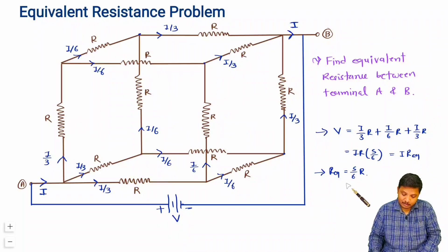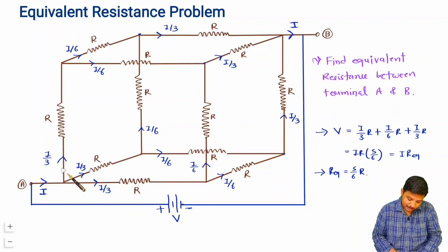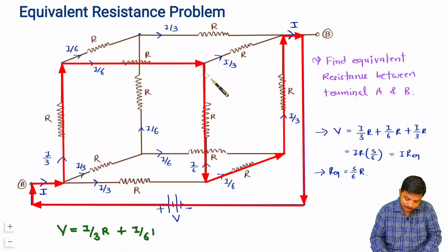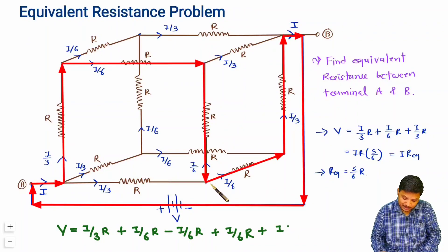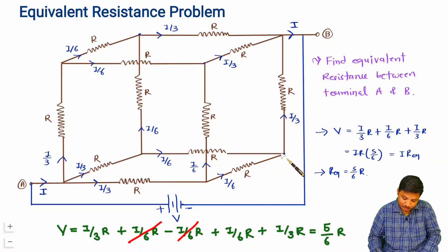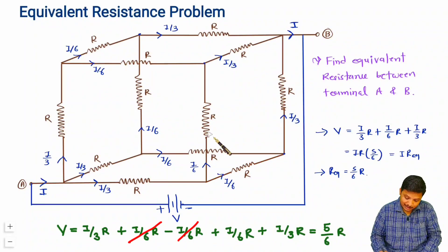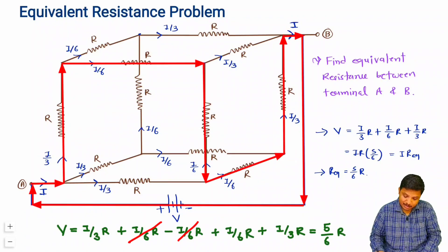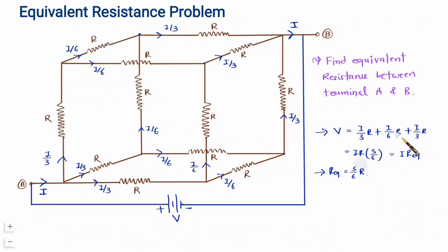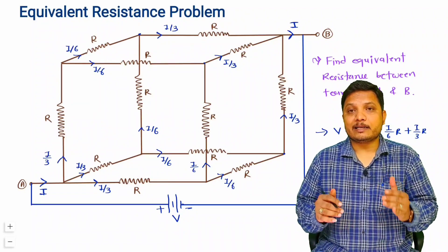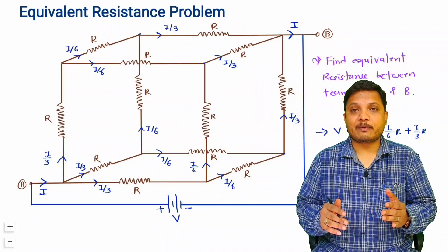Even taking a more complex path where you traverse a segment in the opposing direction, the terms (I/6)·R and −(I/6)·R cancel out, leaving (I/3)·R + (I/6)·R + (I/3)·R — the same result. By all possible paths, the equivalent resistance is 5R/6.